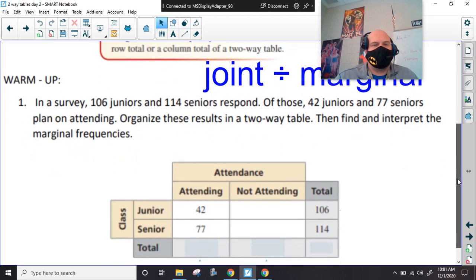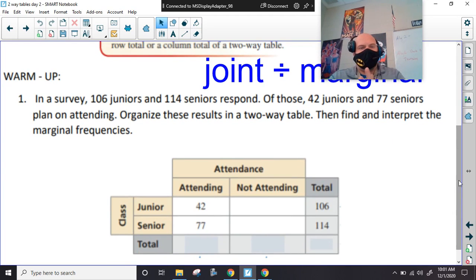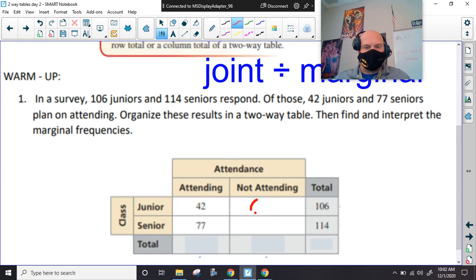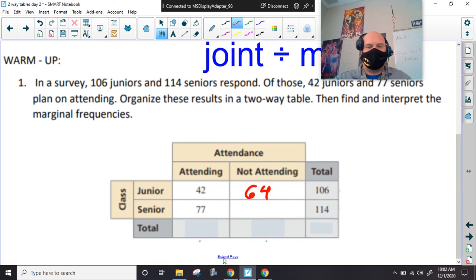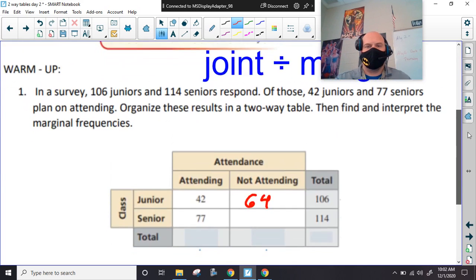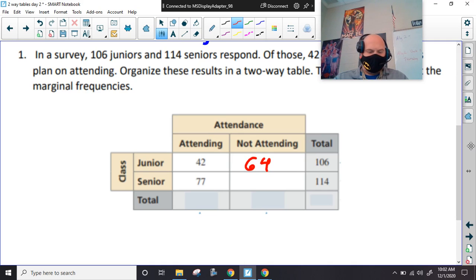All right. So, your warm-up says, was this right here. In a survey, 106 juniors and 114 seniors responded. Got to get my calculator. So, we are supposed to be able to fill out this table from here to make sure. So, the first thing I'm going to do is 106 minus 42 and get 64 to go in right here.